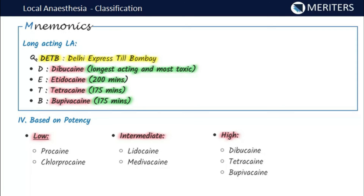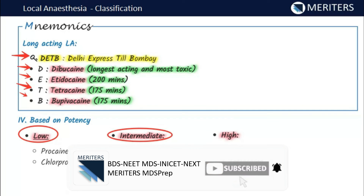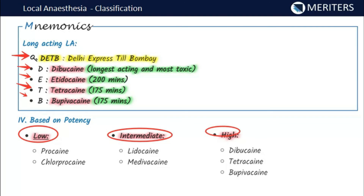Long-acting agents are very important for exams. A mnemonic 'Delhi Express Till Bombay' helps remember them: D = dibucaine (longest acting, most toxic), A = etidocaine (200 minutes), T = tetracaine and B = bupivacaine (175 minutes duration). The final classification is based on potency: low potency includes procaine and chloroprocaine; intermediate potency includes lidocaine and mepivacaine; high potency includes dibucaine, tetracaine, and bupivacaine — all of which are also long-acting agents.